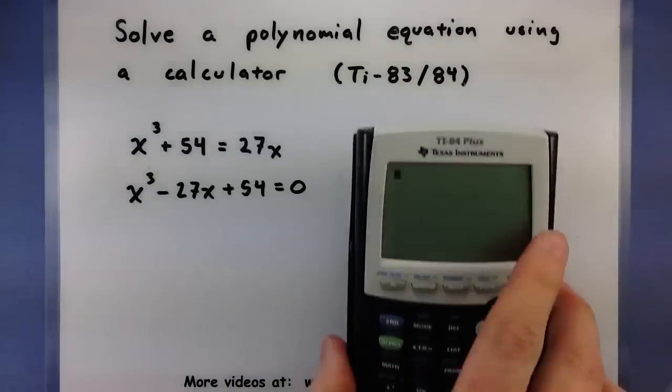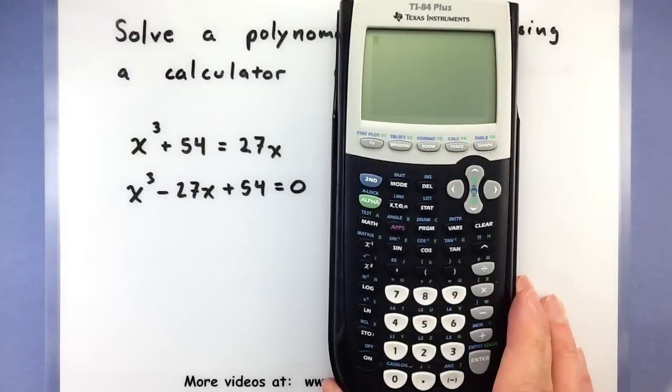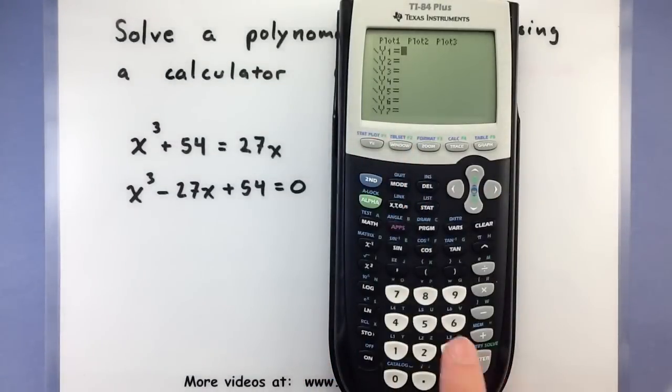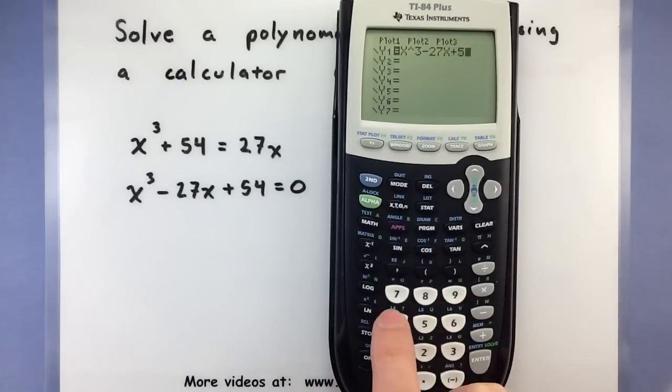Let's go ahead and grab it. So you want to go to your y equals screen and put in our polynomial. So y equals, and we'll put in x cubed minus 27x plus 54. Looks good.